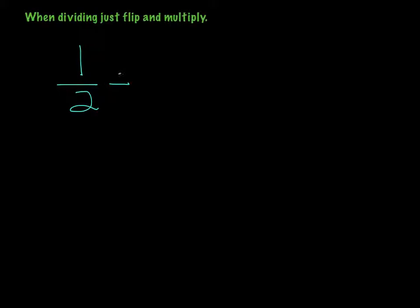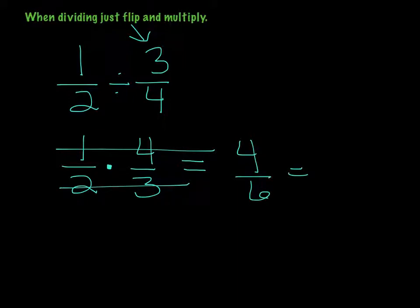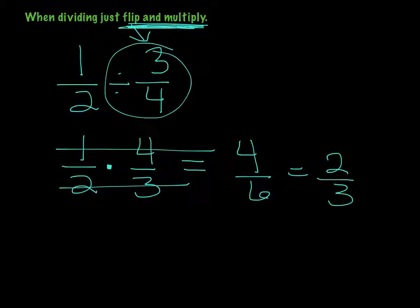These last examples are division problems. When dividing, like 1 half divided by 3 fourths, all you have to do is flip the second fraction and multiply, because multiplying by the reciprocal is the same as dividing. Then go across the top and across the bottom and simplify as necessary. When it's division, flip the fraction next to the division sign only, then multiply.